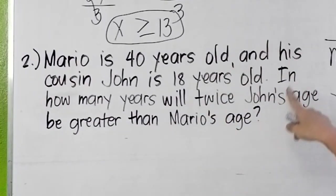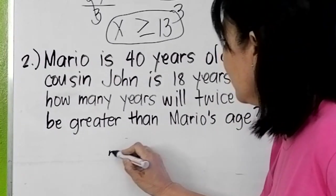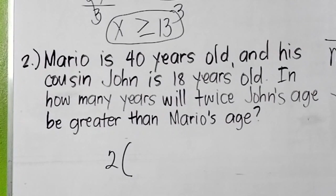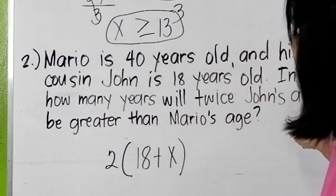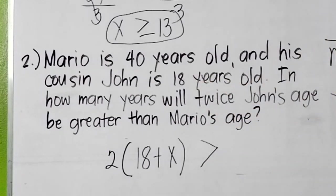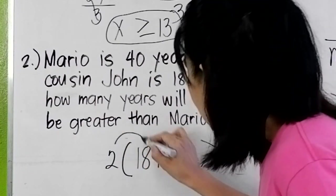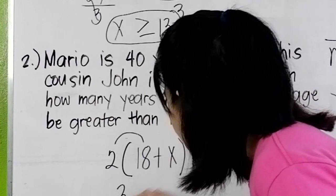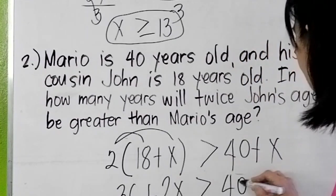Let's come up with an equation. In how many years will twice John's age, so that will be twice or two times John's age in x years, this, two times 18 plus x, be greater than Mario's age. It will be greater than Mario's age. So Mario in x years is 40 plus x.